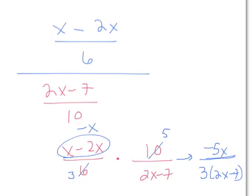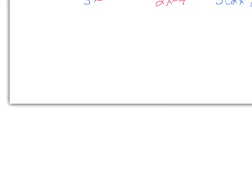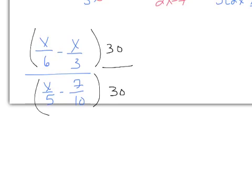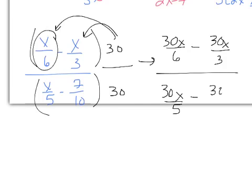Now we'll do the same problem using Method 2. We have to identify the LCD of all the fractions involved. The original problem was x over 6 minus x over 3, all over x over 5 minus 7 over 10. Looking at all four denominators, we can find a common denominator of 30 — all of these values go into 30. Method 2 says to multiply both the overall numerator and overall denominator by the LCD, which is really multiplying by 30 over 30, or just 1. Distributing 30 gives 30x over 6 and 30x over 3 in the numerator, and 30x over 5 minus 30 times 7 over 10 in the denominator.